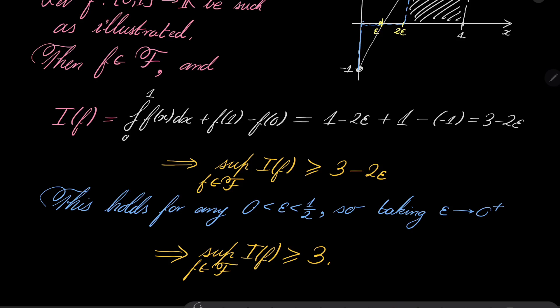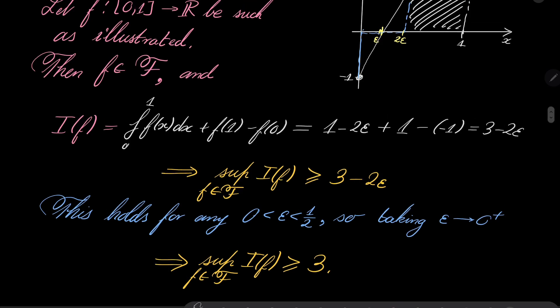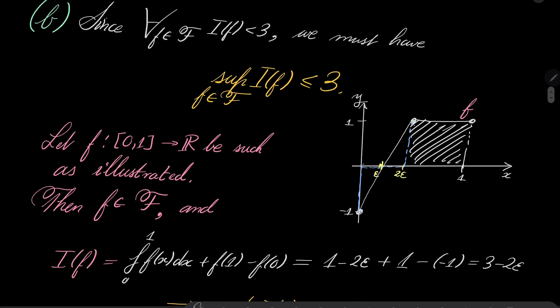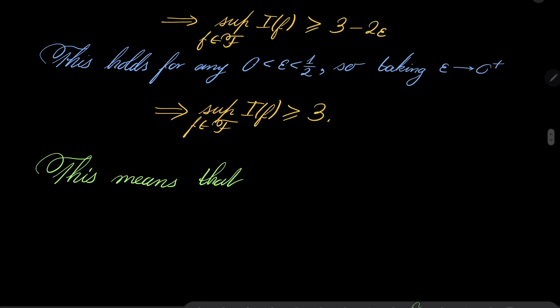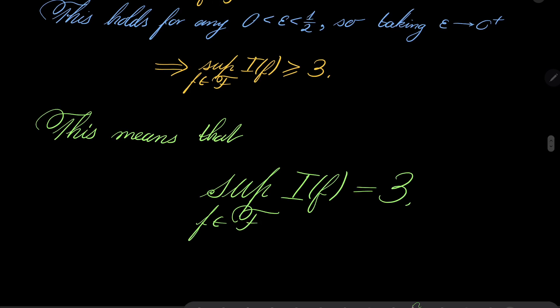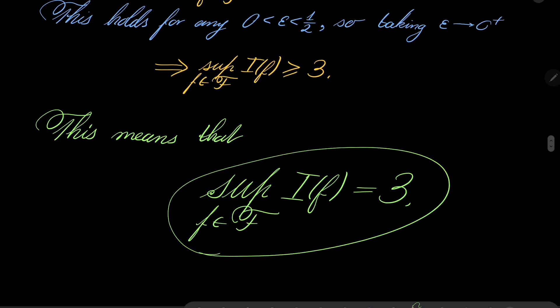And now let's just compare this result. It is greater than or equal 3, and at the same time it is less than or equal 3. This means this supremum equals 3. And this closes our problem.